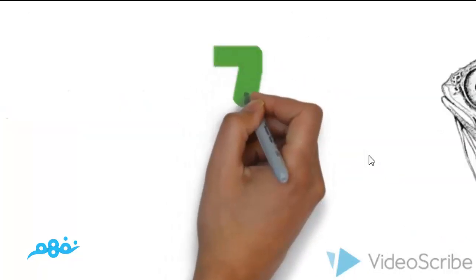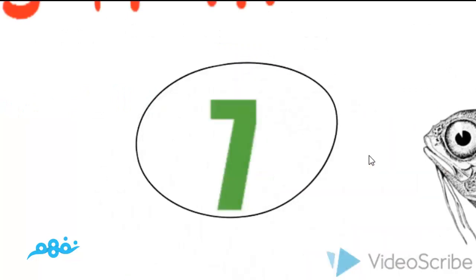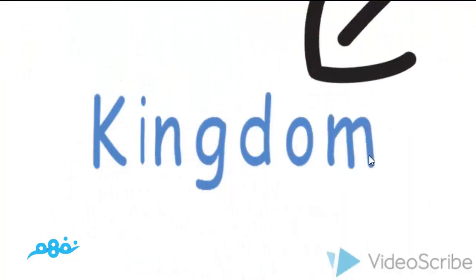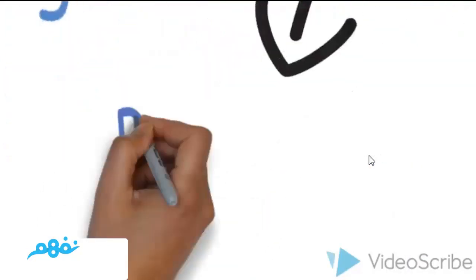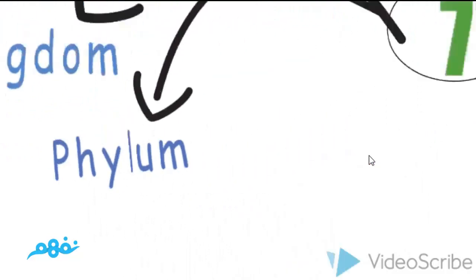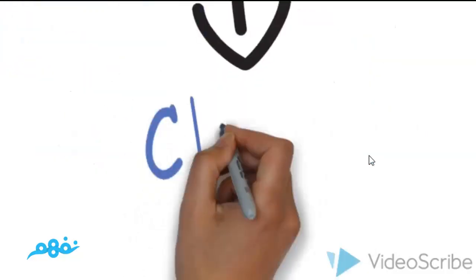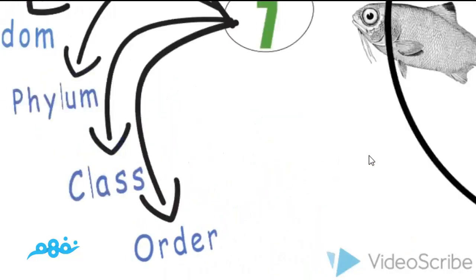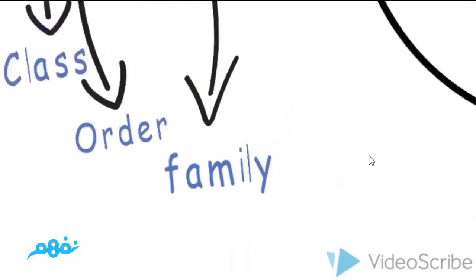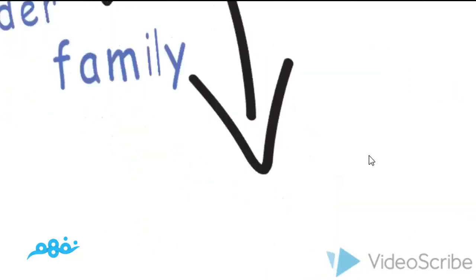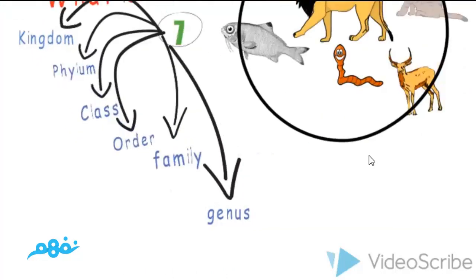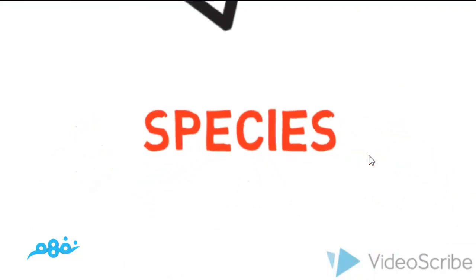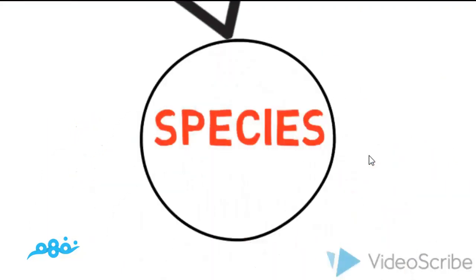But how? We have seven groups to classify. The first group called kingdom. And the second group called phylum. And the third one called class. What about number four? It's called order. And five group called family. What about the sixth one? It's genus. And finally, the last group called species.